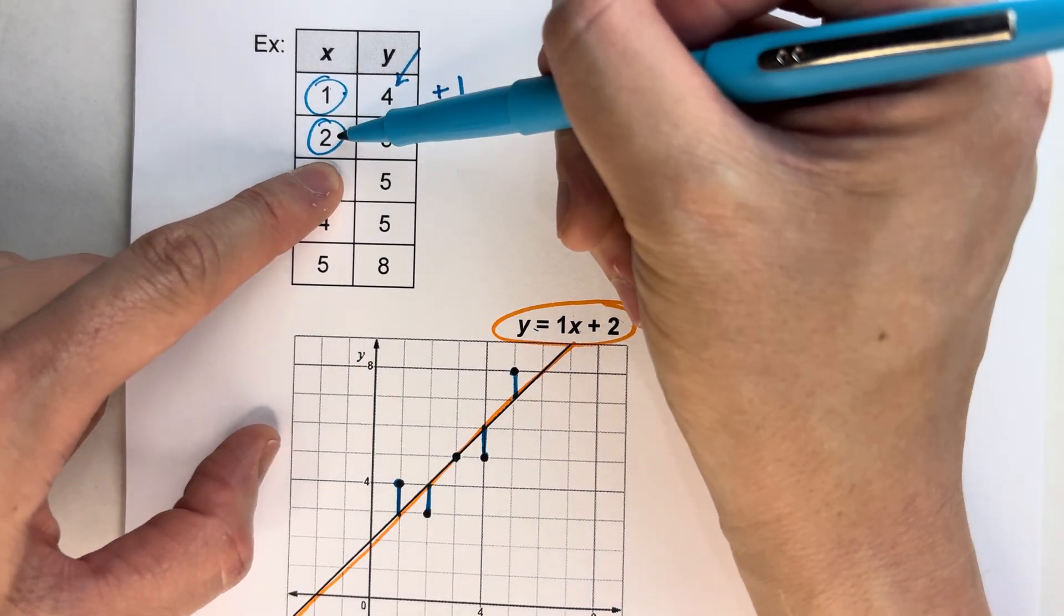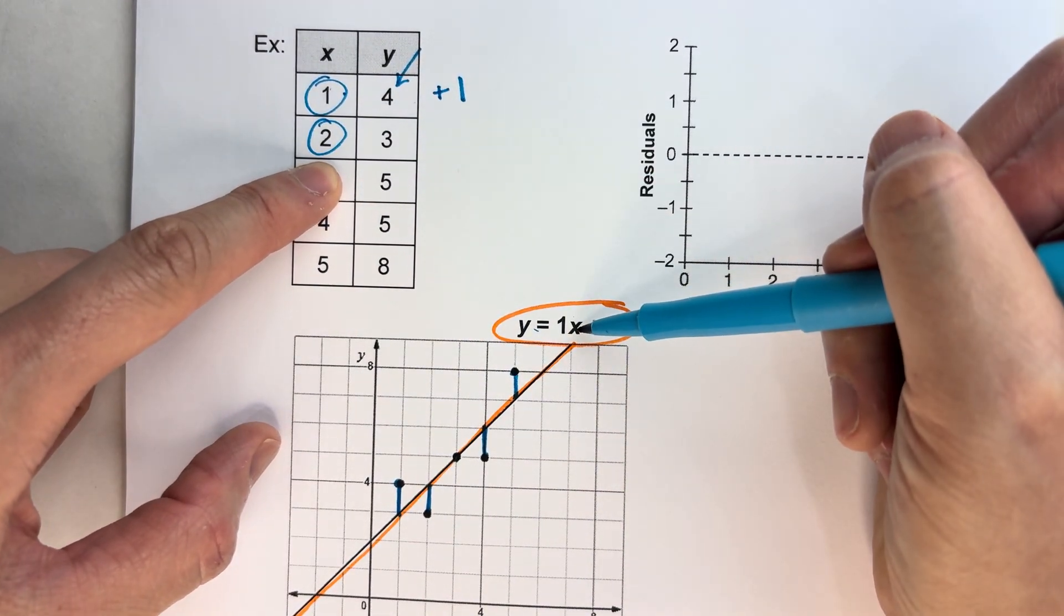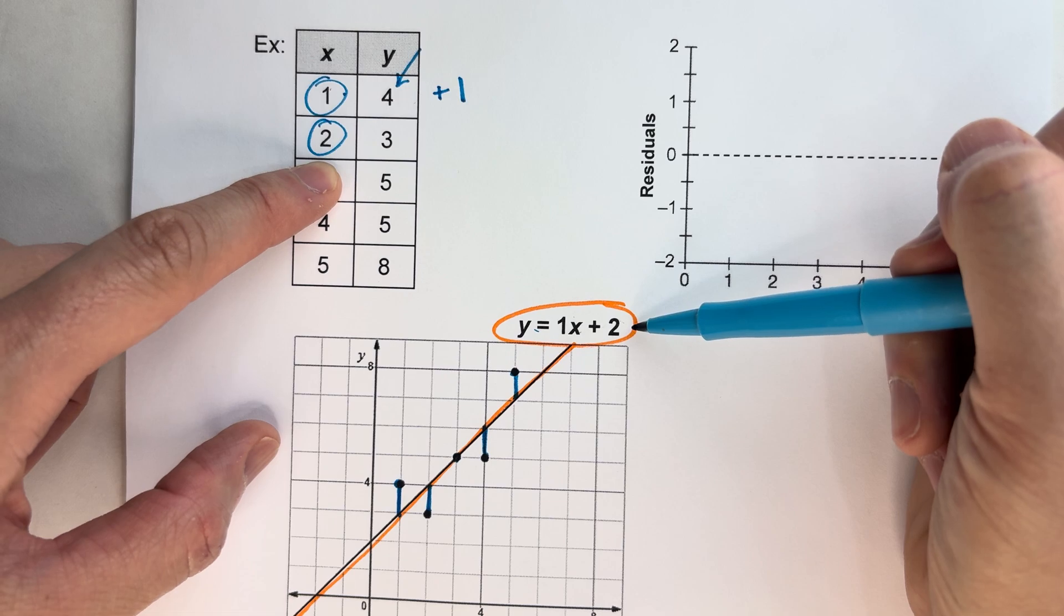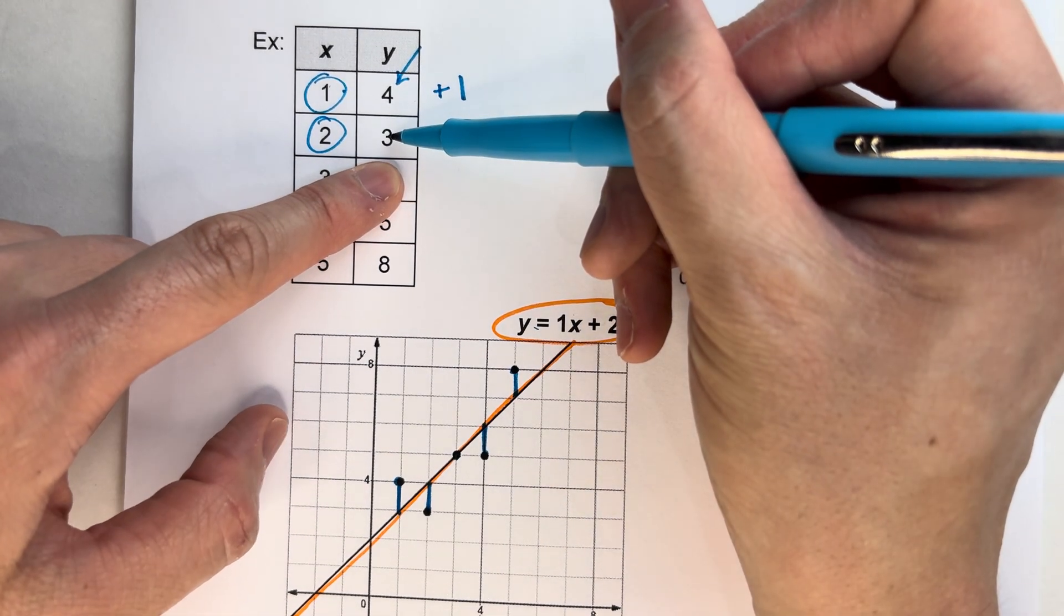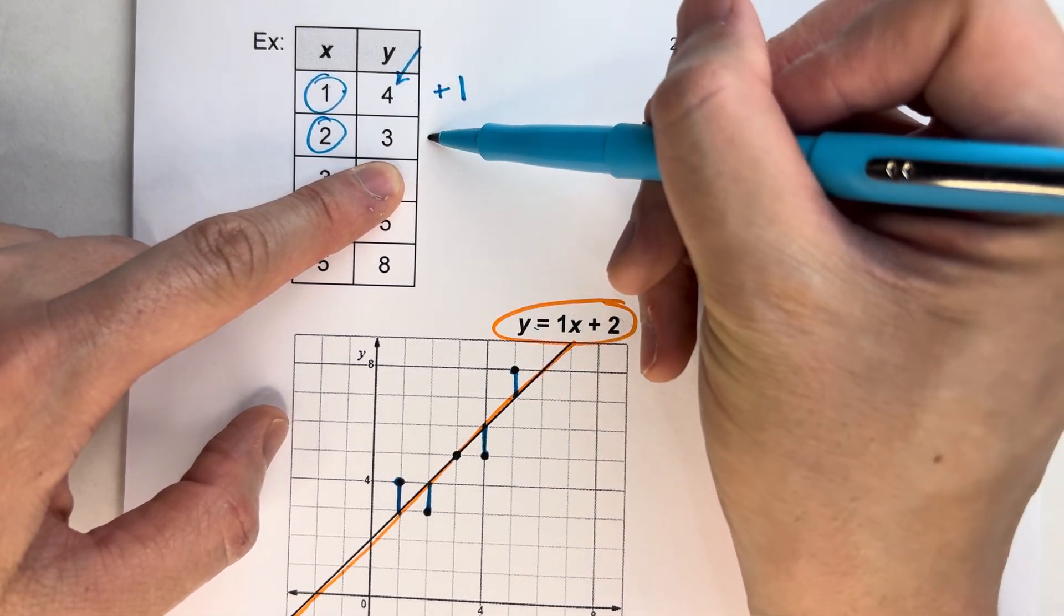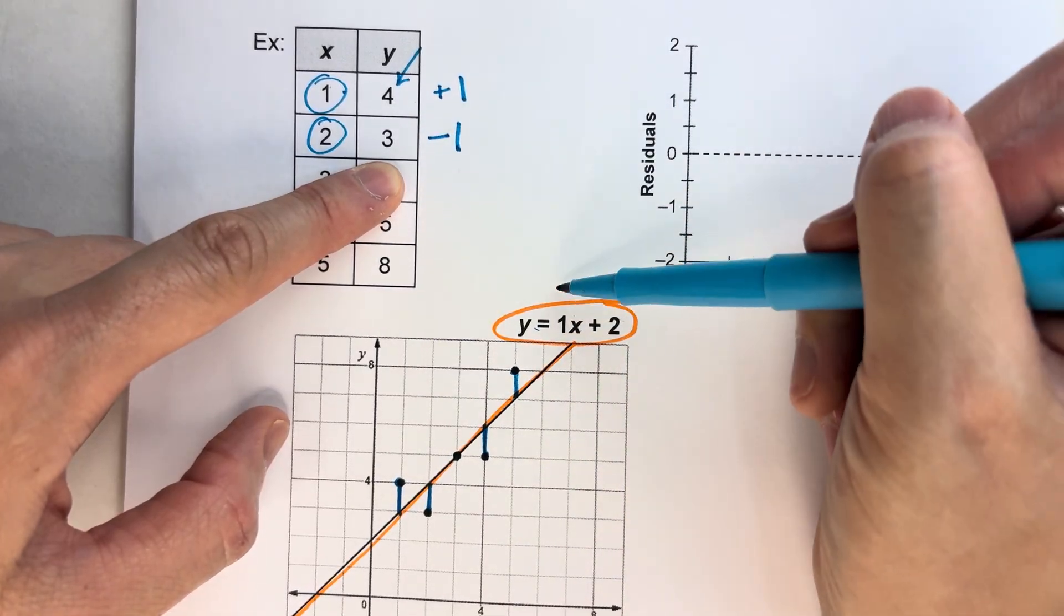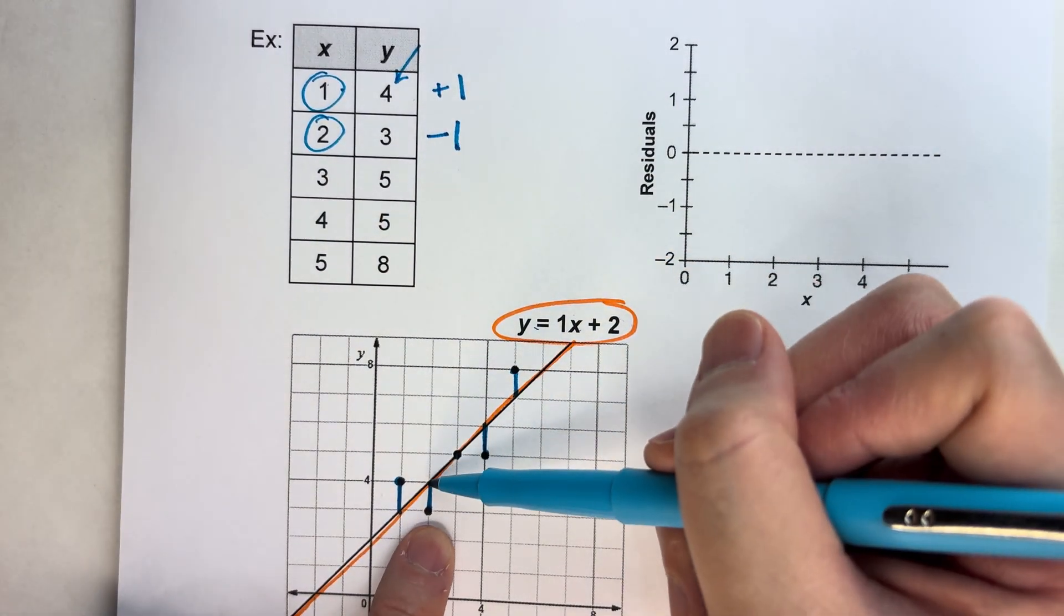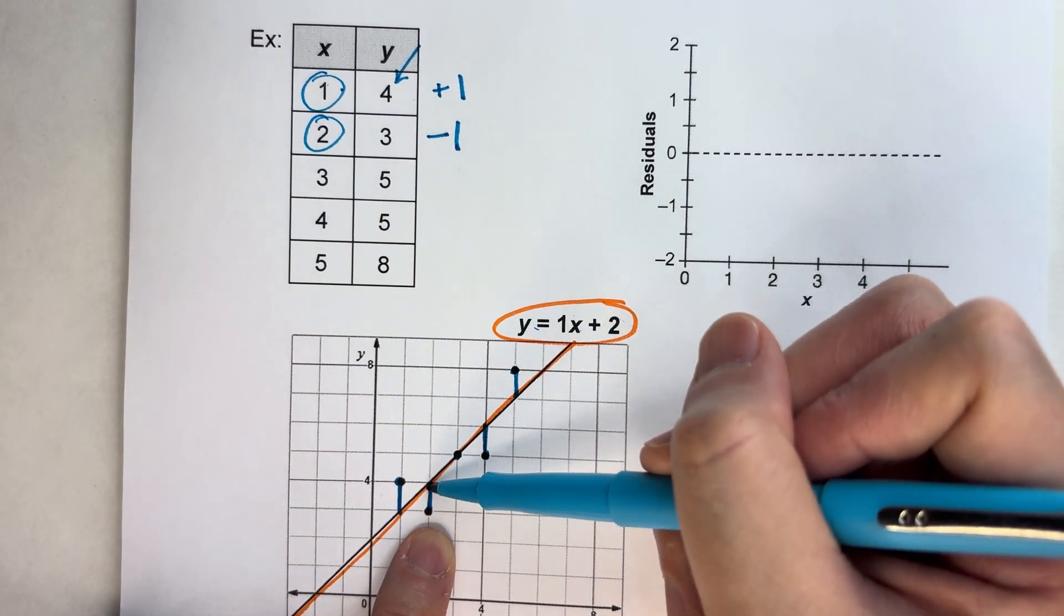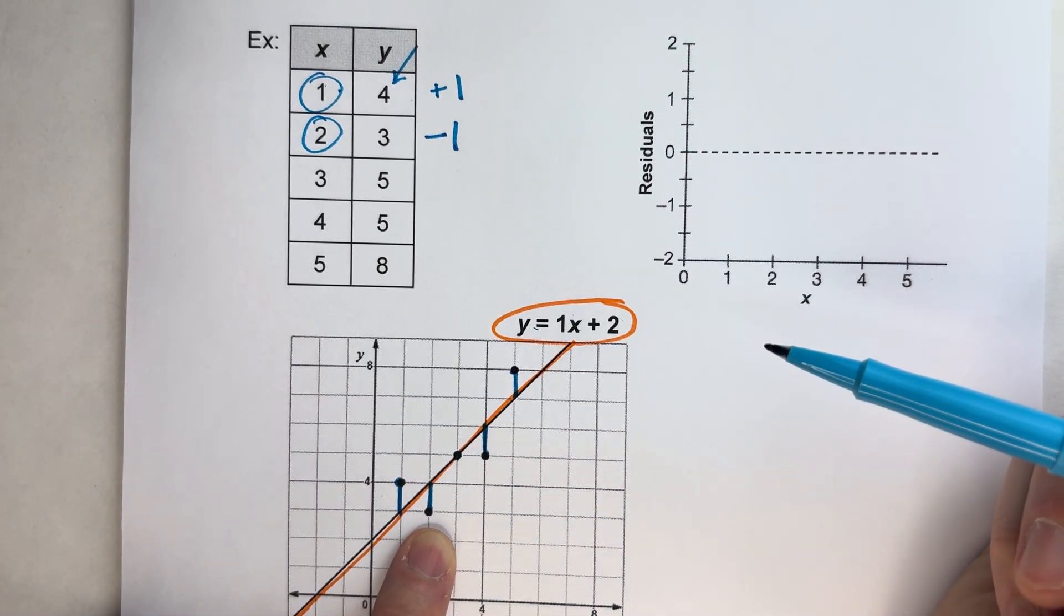Now let's do the second one for 2. 1 times 2 is 2 plus 2 is 4. So I predicted it would be a 4. But I got a 3. So actually, I'm 1 below what I predicted it to be. And if you remember from our graph, look, it's 1 unit below the line of best fit.